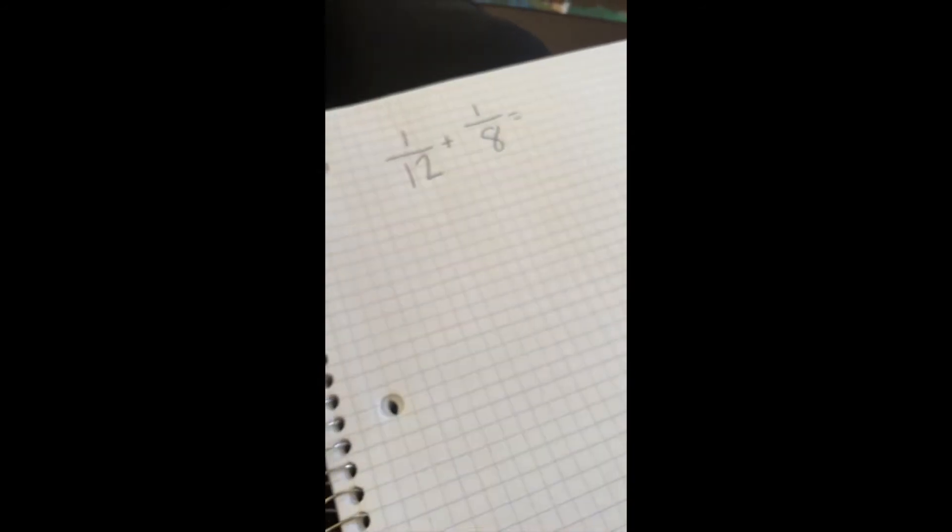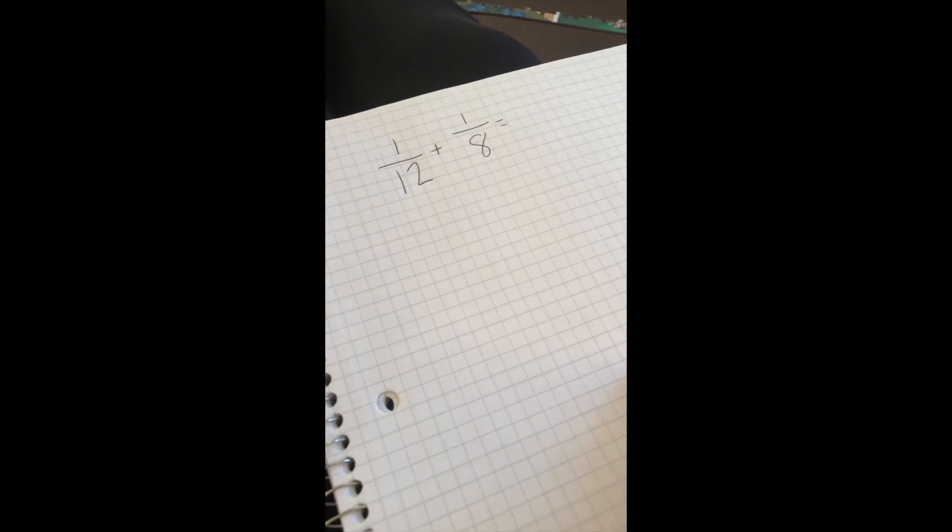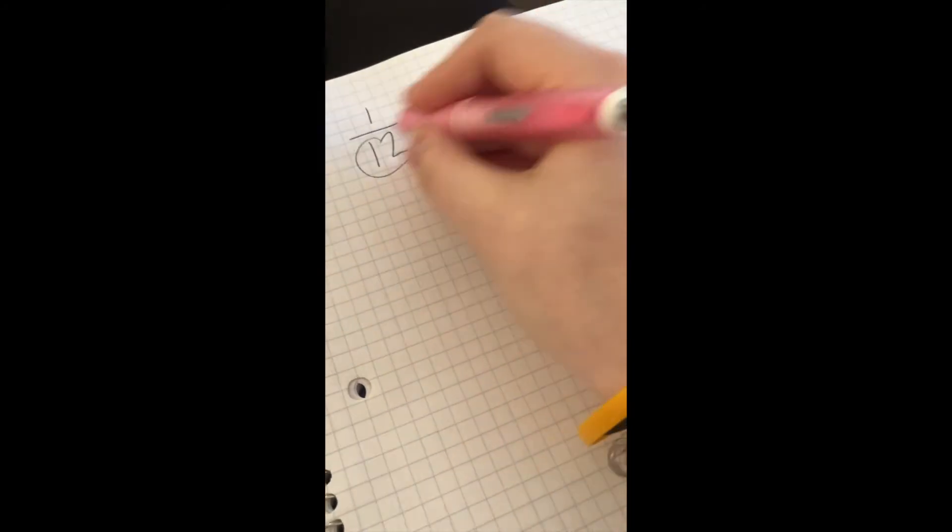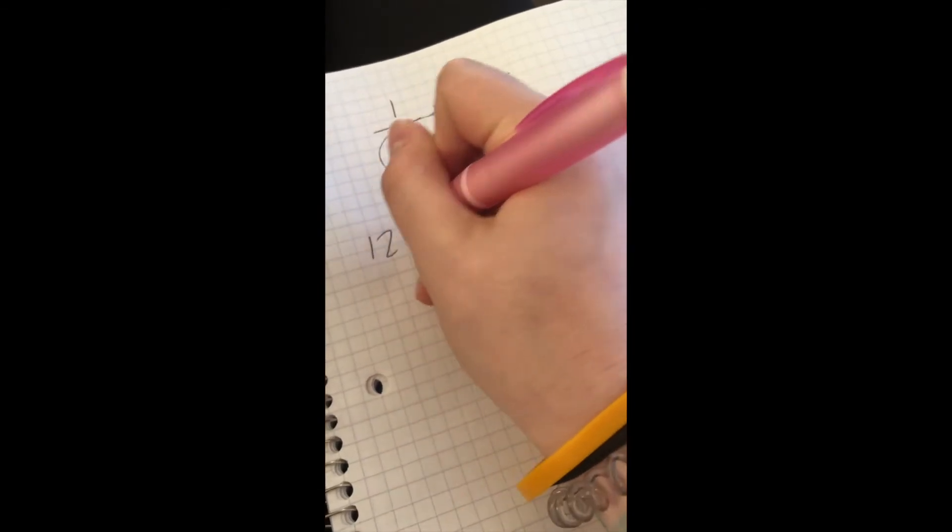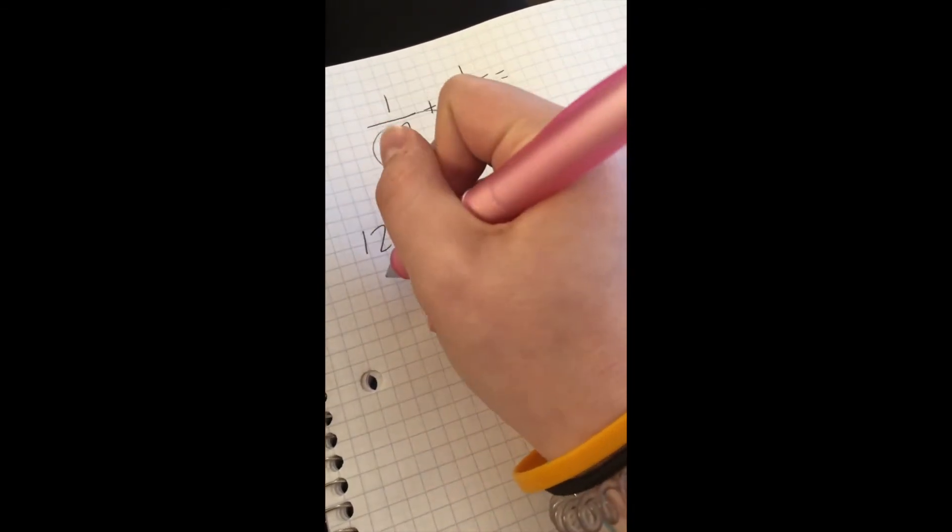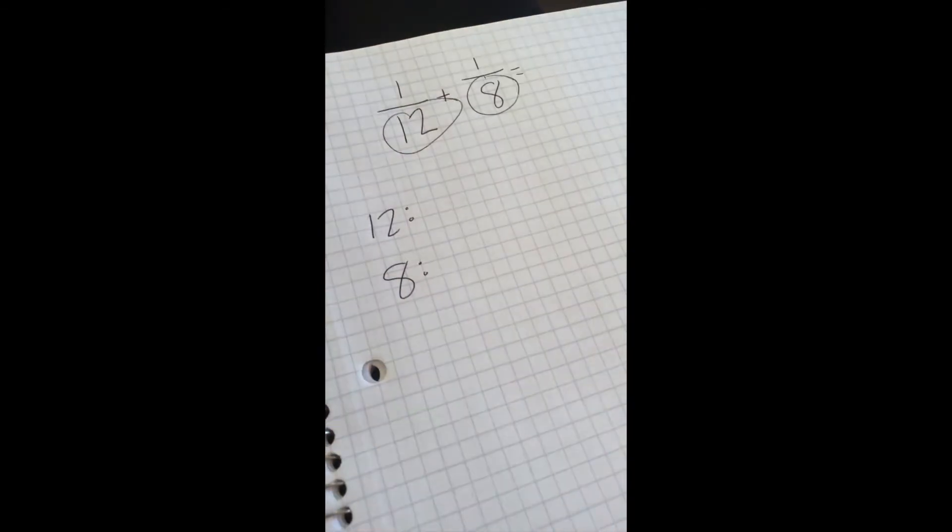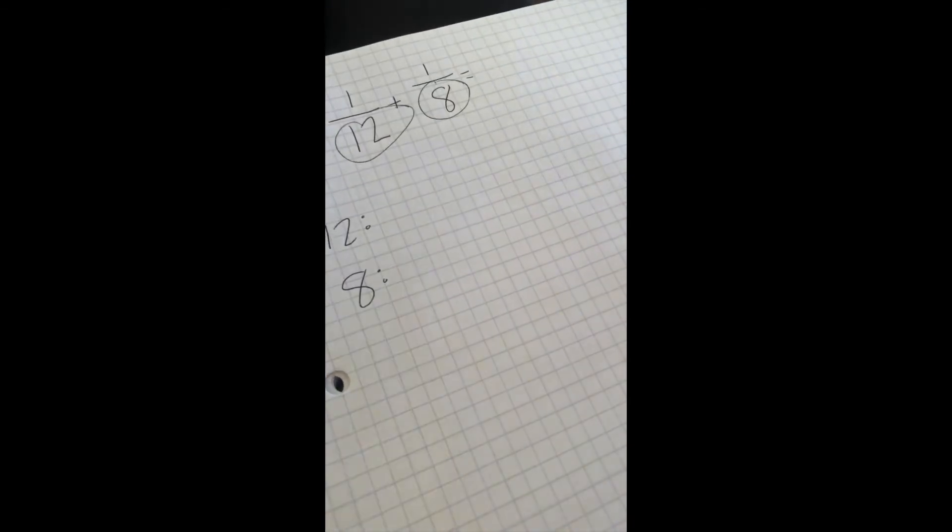Okay, one more example for you. If I have something like 1 twelfth and 1 eighth. Again, denominators are different, but I still want to add them together. So I need to change my fractions so they have the same denominator. So I have 12, I have 8, and I'm going to list my multiples of 12.